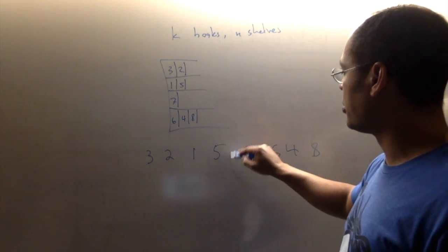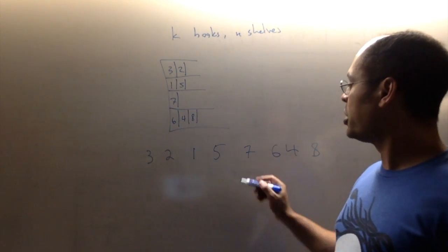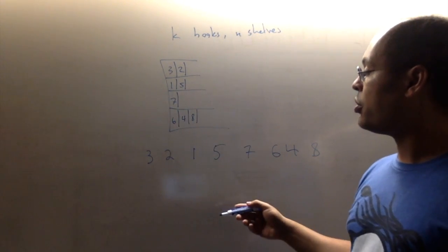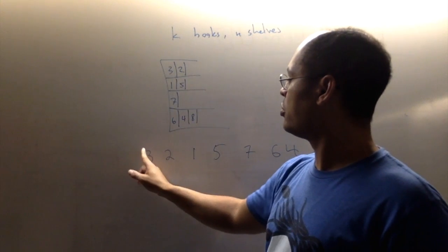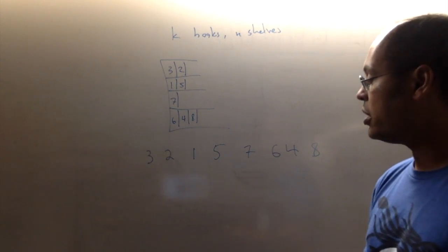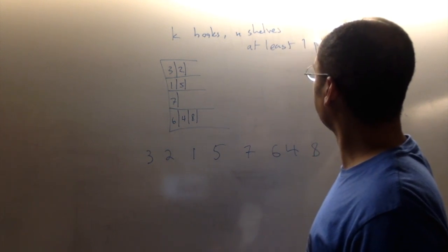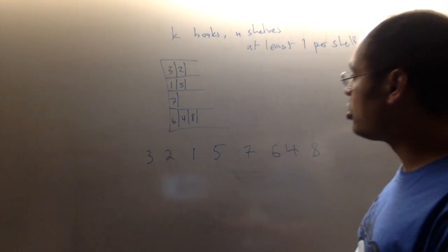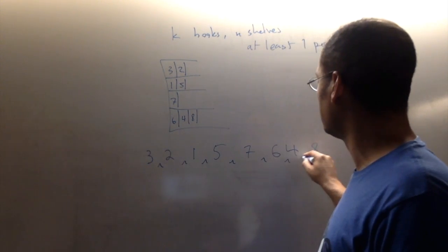We can't have shelf separators like that, because that would mean that in between those two separators, there was an empty shelf. So we can have at most one shelf separator between any two of these numbers. And furthermore, we're not allowed to start or end with a separator, because that would say that we start with an empty shelf. We start by saying nothing, new shelf, three, two, right? So in this setting, where we have at least one per shelf, that's the assumption here, the only legal places that we can possibly put our shelf separators are in the spaces between the numbers in our sequence.